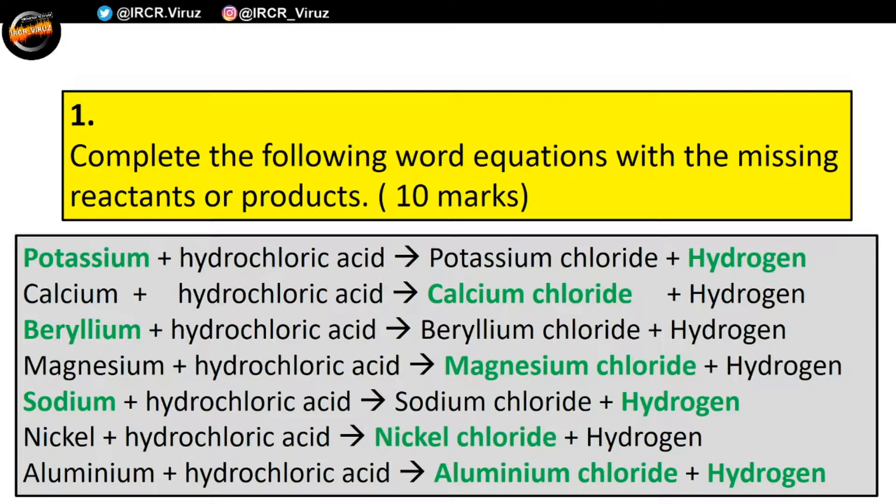Now, if you can spot the pattern: the name of the salt is always going to be the name of the metal first. And if you're using hydrochloric acid, it will be a chloride. Like I said before, if you understand the rules of the game, it doesn't matter what team is playing — you're always going to get your answer right. It doesn't matter what metal you're given, the results are always going to be the same: a salt and hydrogen, and the name of the salt will have the name of the metal and chloride because you're using hydrochloric acid.